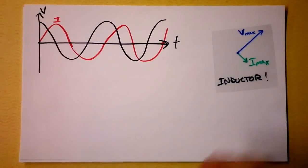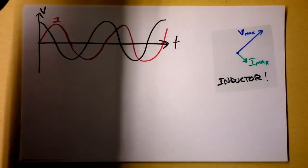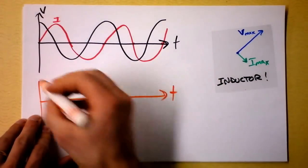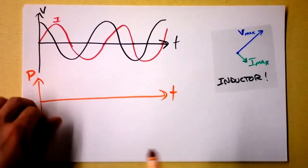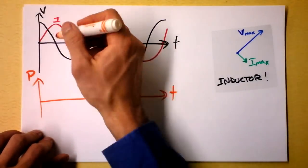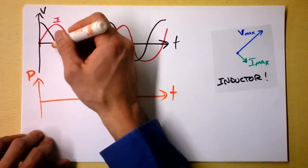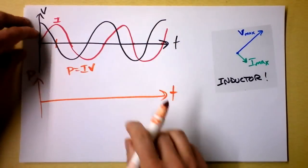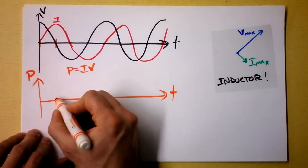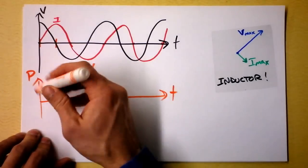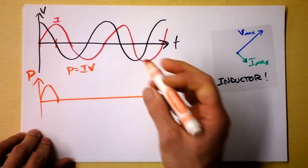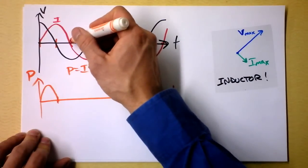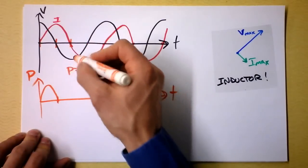In a circuit with an inductor and an AC power supply, the power is sometimes positive and sometimes negative. From this point to this point, current and voltage are both positive, so we have positive power reaching a maximum right in between. Then the voltage goes negative while the current is still positive, so we get negative power.